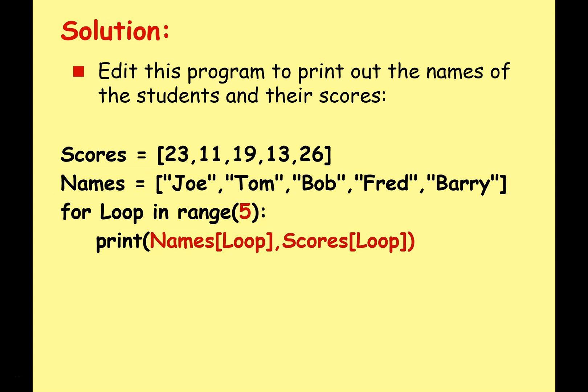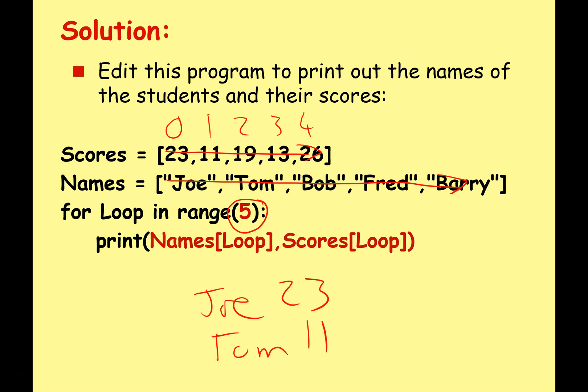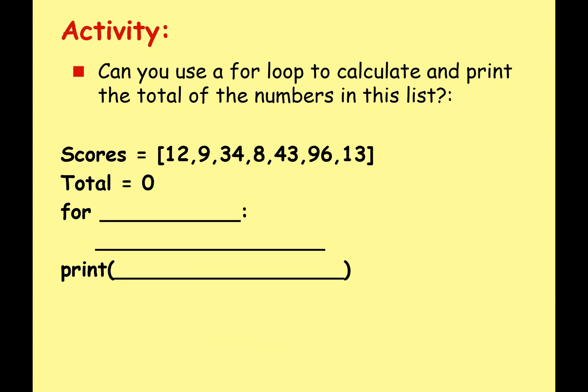Let's look at the solution. We should use for loop in range five because there are five items in both lists - zero, one, two, three, four - so range five will cycle through each element in the arrays. Then we use print names loop, scores loop so it goes through each item in each list in the correct sequence: it'll print Joe 23, then Tom 11, and so on until all the details are printed.